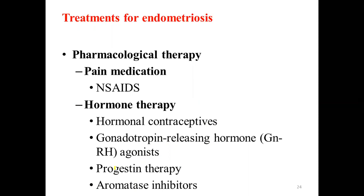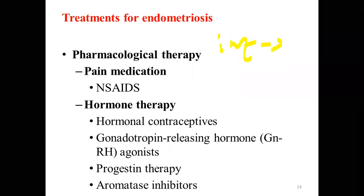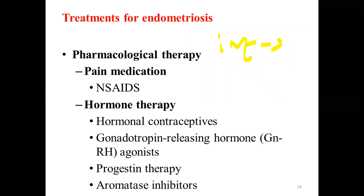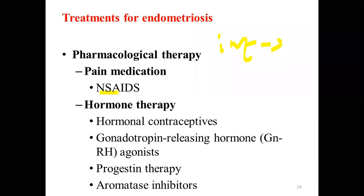For pharmacological treatment of endometriosis, NSAIDs can be used because the level of prostaglandins is usually high in endometriosis, and NSAIDs relieve pain by blocking prostaglandin synthesis. However, NSAIDs are usually given as adjuvant therapy with other medications. The frontline management consists of hormonal therapies: hormonal contraceptives, gonadotropin-releasing hormone agonists, progestin therapies, and aromatase enzyme inhibitors.